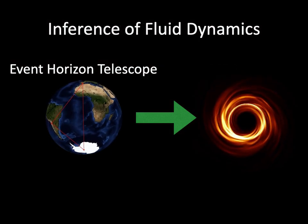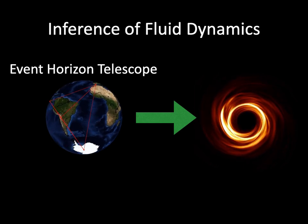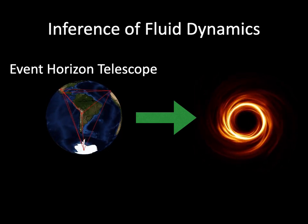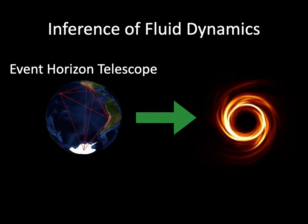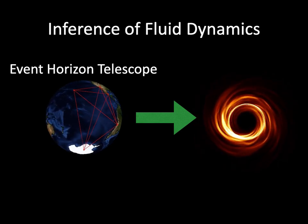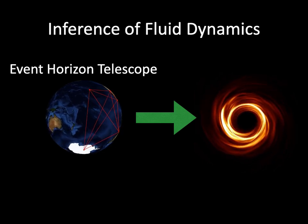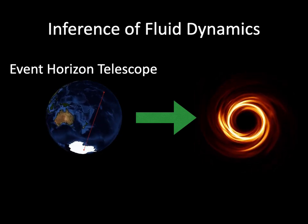In this work, we present an approach to infer dynamic properties of sources that evolve during acquisition. This is particularly important for studying the black hole in the heart of our own Milky Way galaxy, which rapidly evolves on the timescale of minutes.